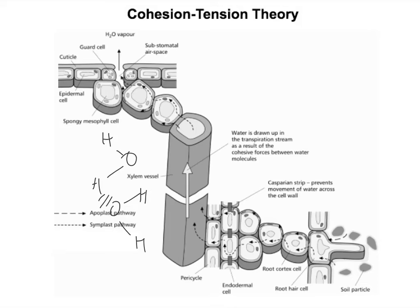How water moves through the xylem is called the cohesion-tension theory. The hydrogen bonds hold the water molecules together in the xylem — that's called cohesion — and the suction created when water is pulled up through the xylem creates tension. The fact that all the water molecules are joined together creates this continuous column of water, a key phrase used to describe the xylem structure.